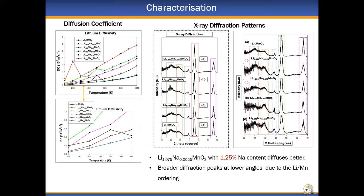The X-ray diffraction patterns for the sodium substituted systems are compared with the XRD for the Li2-MnO3. We note the broadening of peaks at lower angles as a result of lithium and manganese ordering at the transition metal layers. We also note the shifting of some peaks to lower angles, indicating the presence of sodium, which enlarges the lattice.